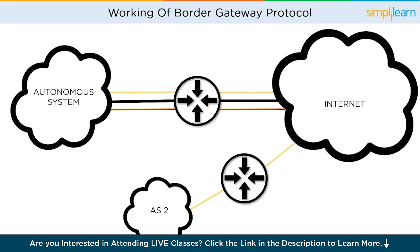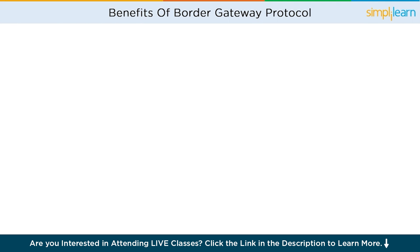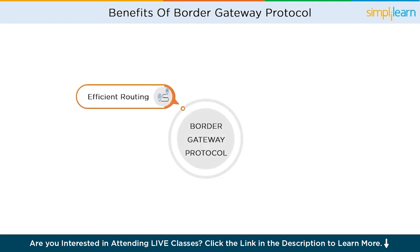Border Gateway Protocol offers several key benefits that make it an indispensable part of the internet infrastructure. The first is efficient routing. BGP enables efficient routing by determining the best paths for data packets to reach their destinations. It takes into account factors like network performance, cost, and policies set by network administrators, ensuring that data takes the most optimal route, resulting in faster and more reliable communication.